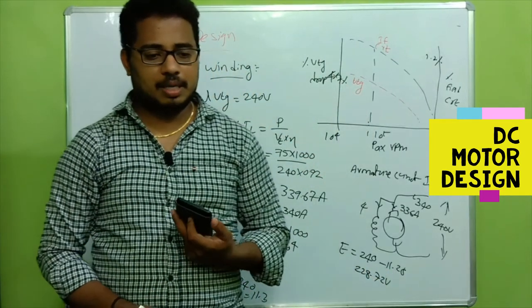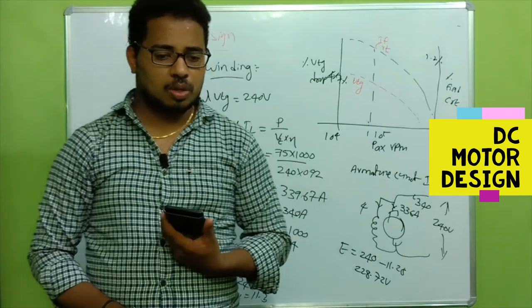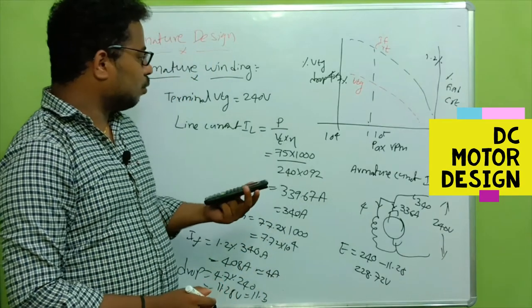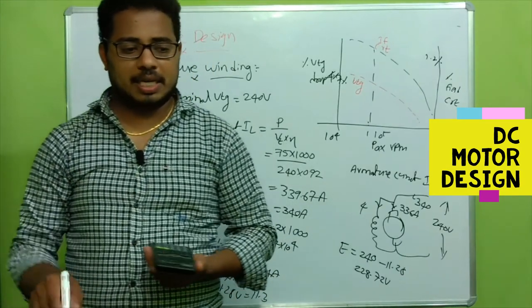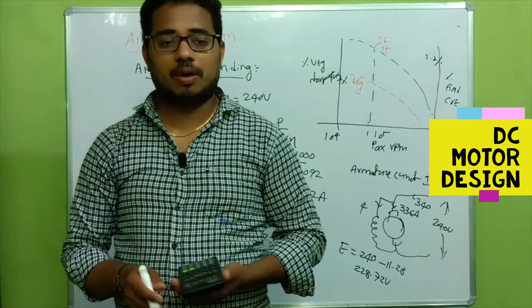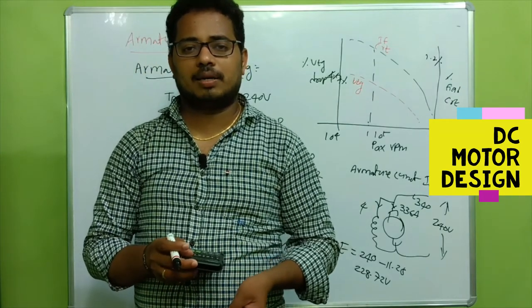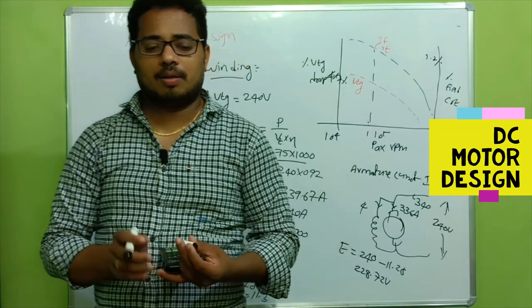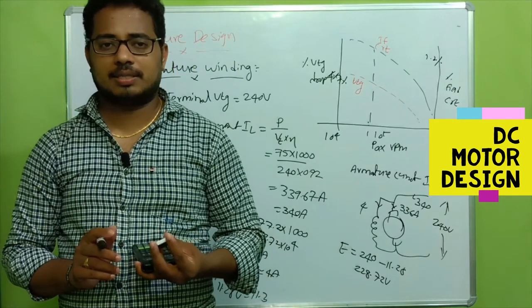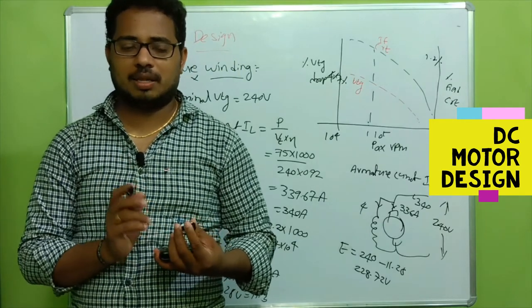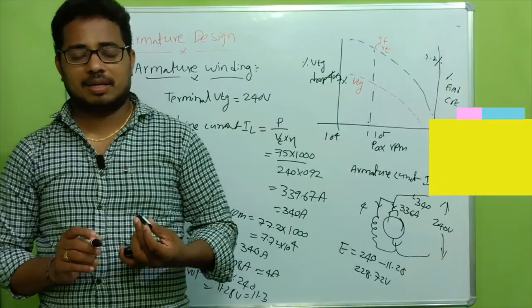Up to now we have calculated the voltage and current values. In the next part we are going to calculate the conductor sizes, insulation, slot dimensions, and winding details. Keep watching.